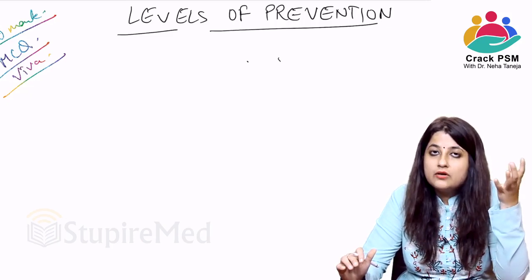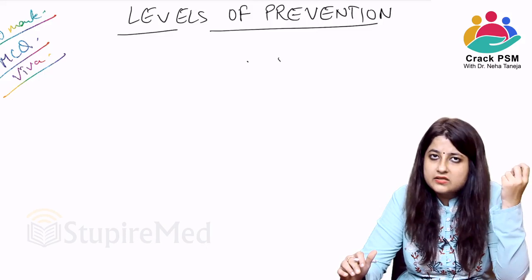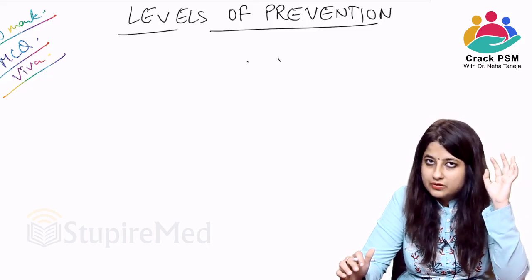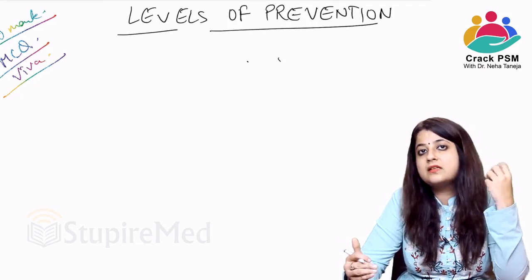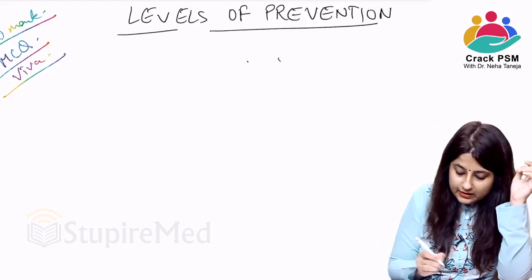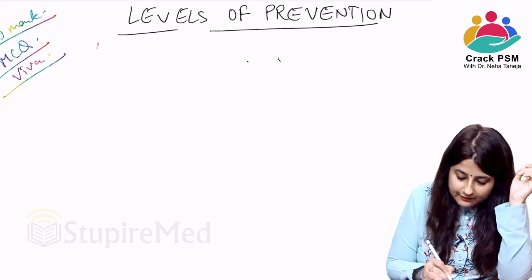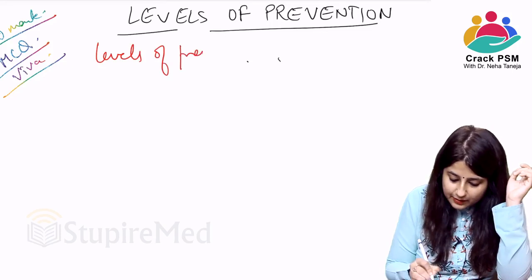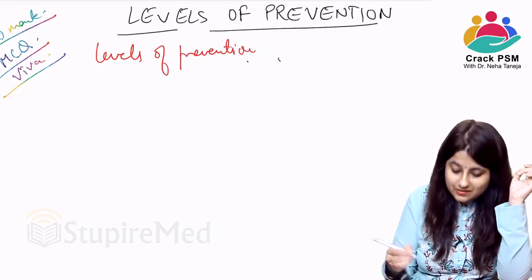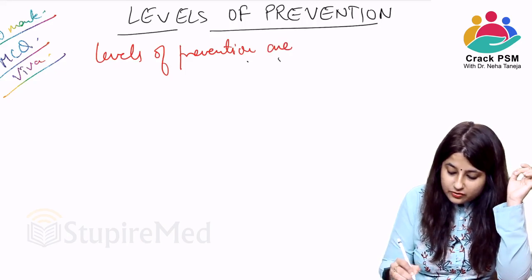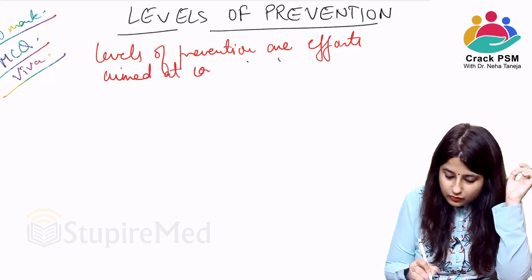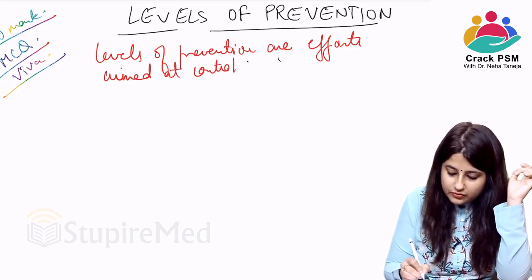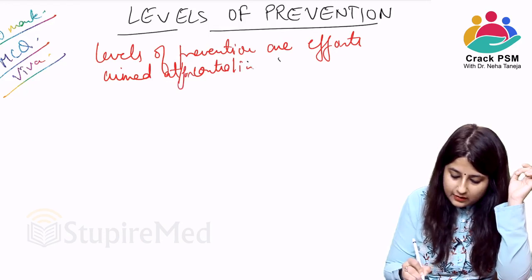Disease controlling is aimed at reducing the incidence, prevalence, and mortality due to the disease. So what is prevention? Levels of prevention are efforts aimed at controlling of a disease.